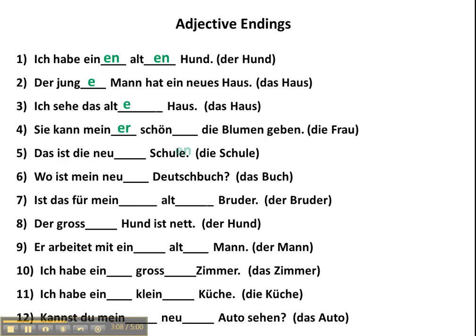Sie kann meiner schönen Frau die Blumen geben. In this case, Frau is the indirect object. Sie kann meiner schönen Frau die Blumen geben. Das ist die neue Schule — this is the new school, so it's predicate nominative after ist. Wo ist mein neues Deutschbuch? Buch is the key word here and this is nominative. We have mein, which is a possessive pronoun, which acts the same as an indefinite article when you're doing adjective endings in German.